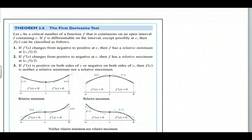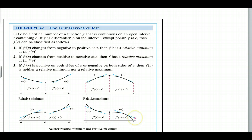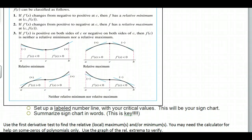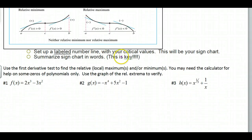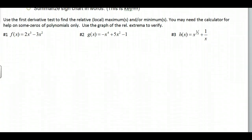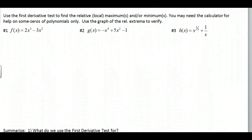Here's the first derivative test — it's exactly what I just described. We set up a labeled number line and test points on either side of each critical value to show that f prime changes from positive to negative, negative to positive, or neither. If neither, it's not a relative max nor relative min — like bottoming out on a hill and then going down again. You'll set up a labeled number line and summarize. Graph with your calculator and check these things out.